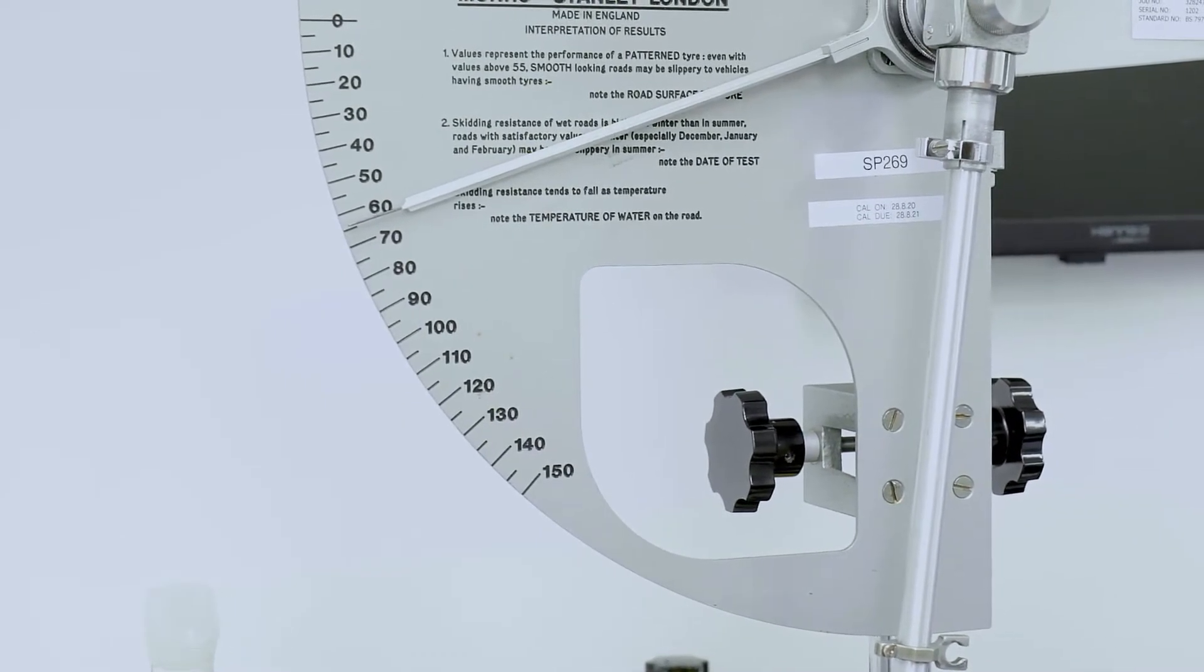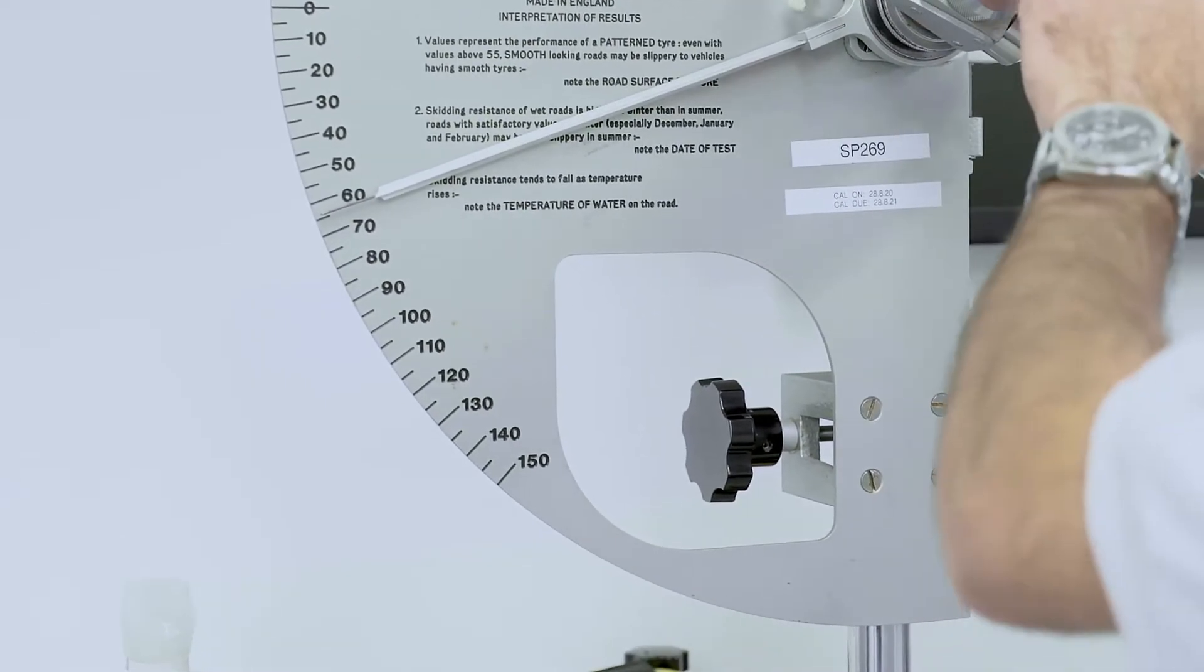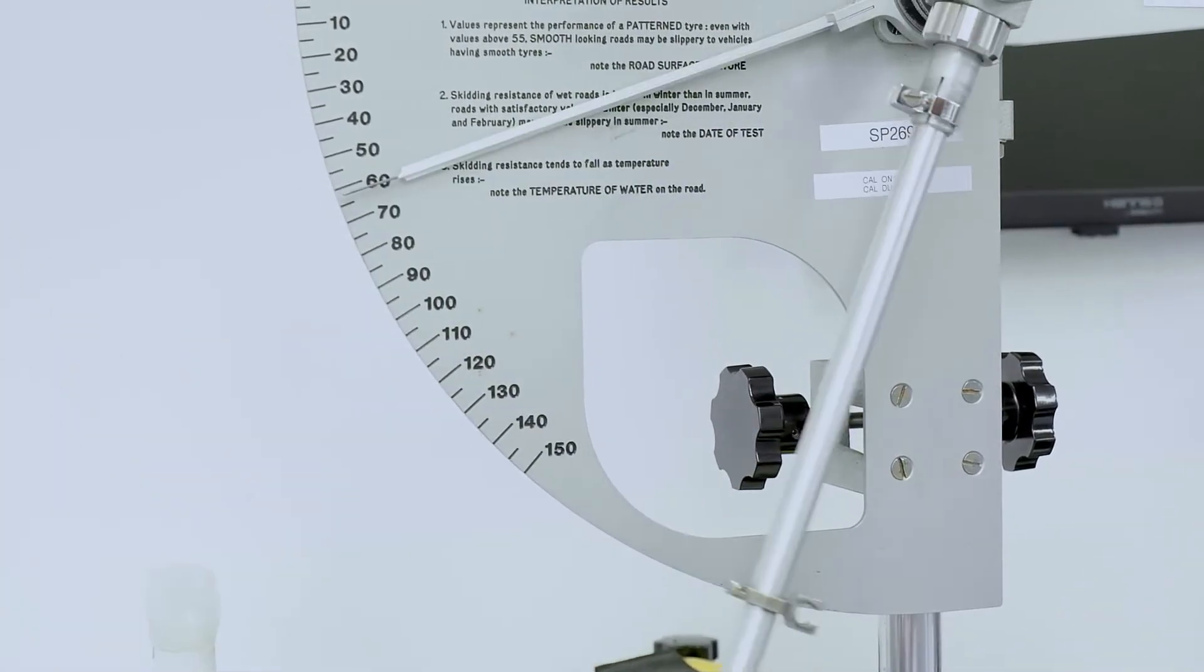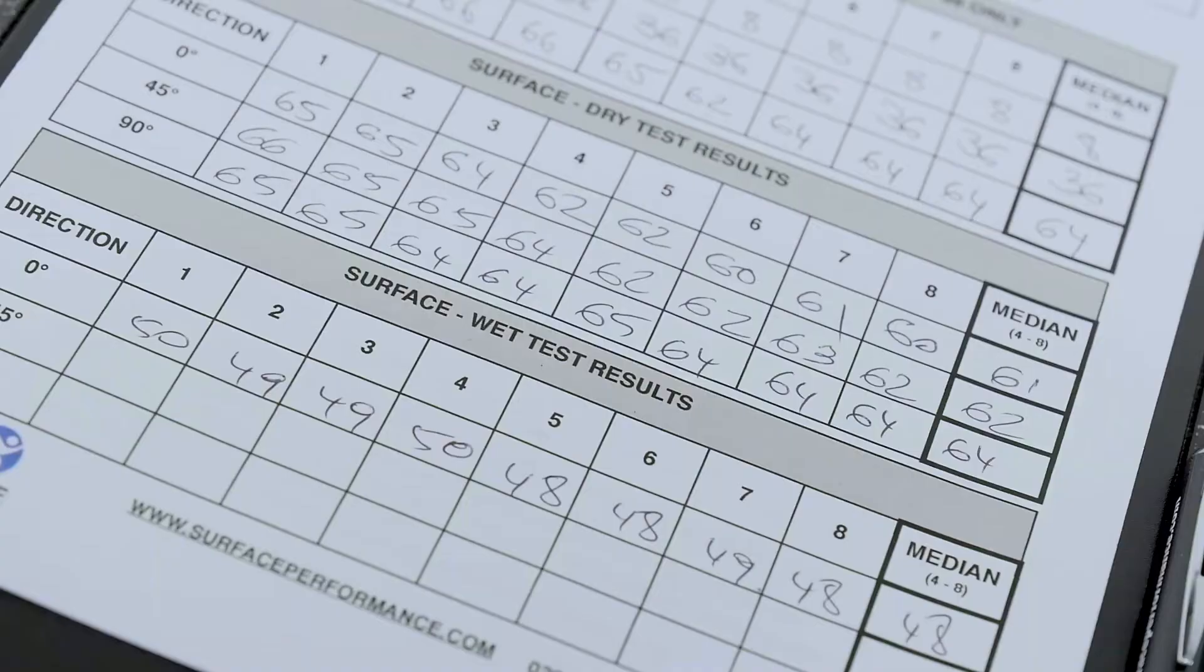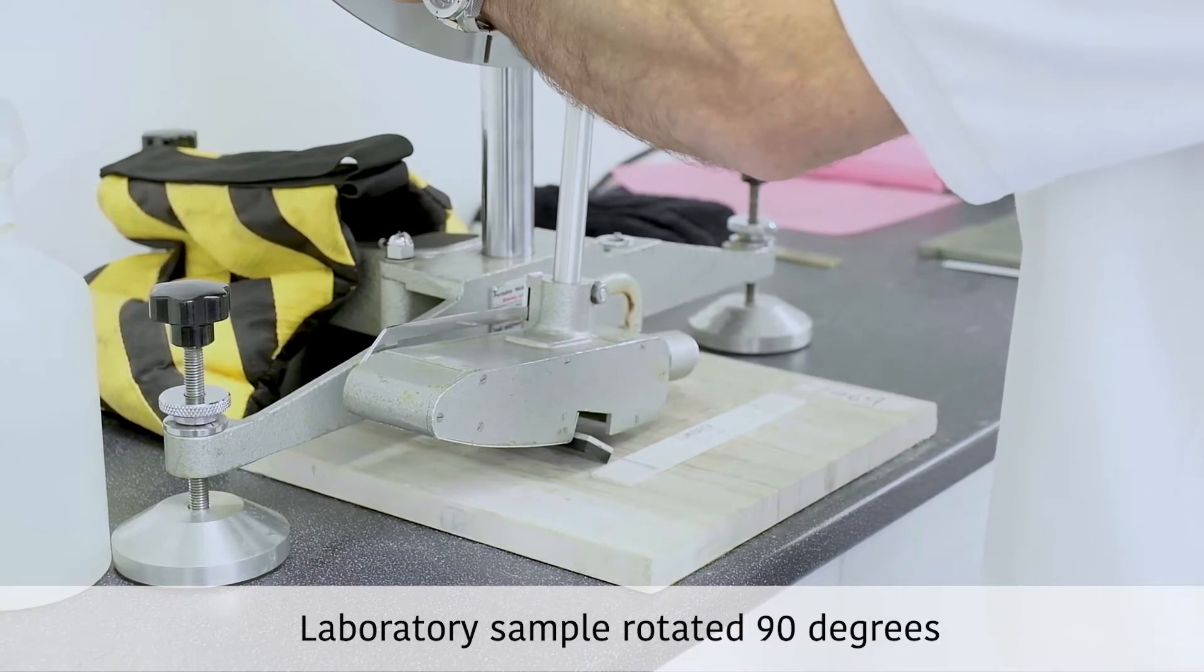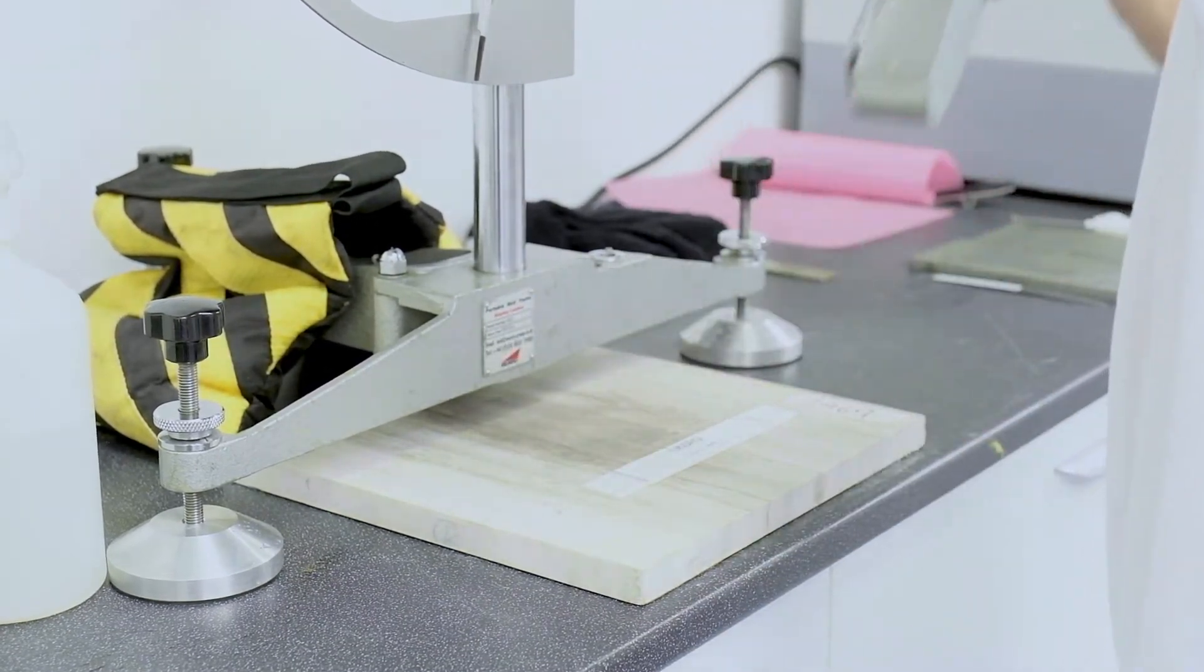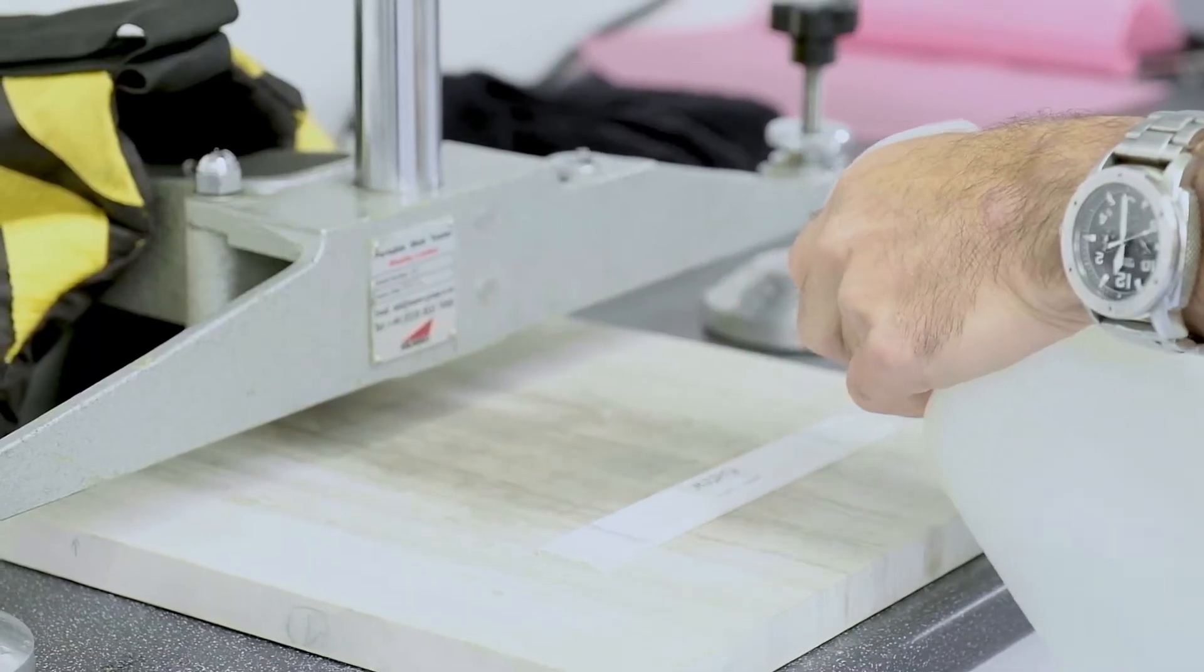After verification of the equipment, the client's sample is then ready to be tested by following the British standard test procedure. The sample is subjected to eight swings in three directions in both wet and dry conditions. The contact footprint has to be reset at every orientation to ensure a precise reading is achieved.